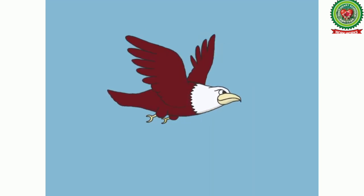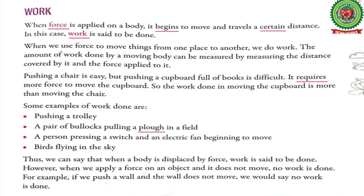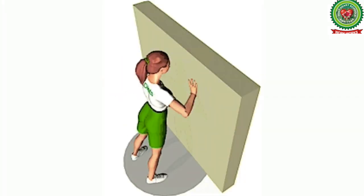Birds flying in the sky is also an example of work done. We can say that when a body is displaced — that is, moved from its original position by force — work is said to be done. However, when we apply force on an object and the object does not move, then no work is done. For example, if we push a wall and the wall does not move, no work is done.